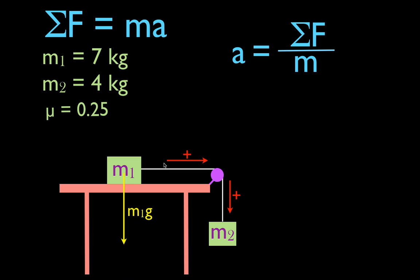Now we're going to draw in all the forces. The first forces are M1g and M2g. The masses are attached by the string, so there's a tension force acting upward on M2 and to the right on M1. There's also a normal force on M1. The normal force and M1g are equal in magnitude but opposite in direction. Finally, because M1 is moving to the right and friction opposes motion, we draw the friction force to the left.